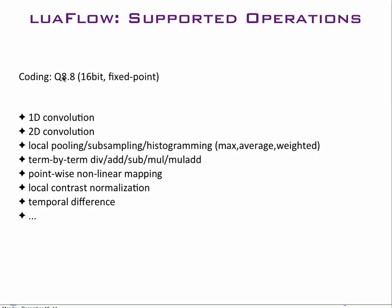The NeoFlow machine uses 16-bit fixed-point arithmetic coded as 8.8 — eight bits above the decimal point and eight bits below. The supported operations include 1D and 2D convolution, local pooling (convolution-based subsampling), histogram, max, average, weighted, term-by-term divide, subtract, and multiply, pointwise nonlinear mapping, local contrast normalization, and temporal difference (subtracting two frames). The goal is to extend this to provide most operators needed for general-purpose computer vision.